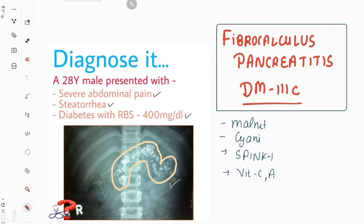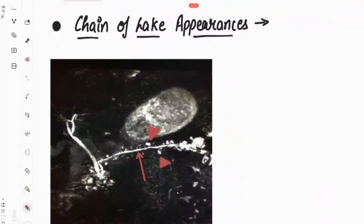Next, how do we confirm the diagnosis of fibrocalculus pancreatitis? We can do both radiological and lab investigations. In lab investigations, we can check random blood sugar, fasting blood sugar, and HbA1c levels, which shows glucose levels over the past 90 days. In radiological investigations, we can do an X-ray showing calcification shadows around the pancreas, as well as CT scan and endoscopic retrograde cholangiopancreatography, which shows a chain of lakes appearance.